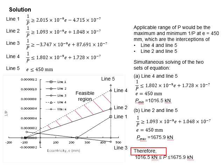Substitute the e into the equation here, you get your P_maximum equals to 1675.9 kN. From here, you know that the applicable range of P will fall in between 1016.5 to 1675.9 kN. With the eccentricity of 450, any value in between these is applicable for the member. And this demonstrates the applications of the Magnel diagram.